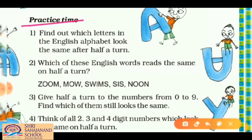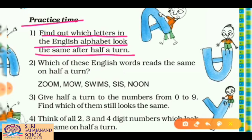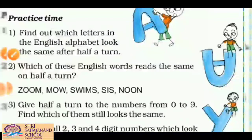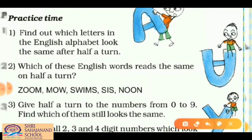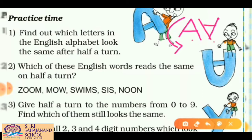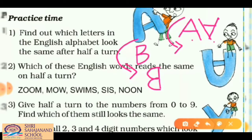Now, practice time. Question 1: find out which letters in the English alphabet look the same after a half turn. We have 26 letters to check one by one. For example, A — give it a half turn and it looks different, so A is not the answer. B — in half turn it also looks different, so B is not the answer.